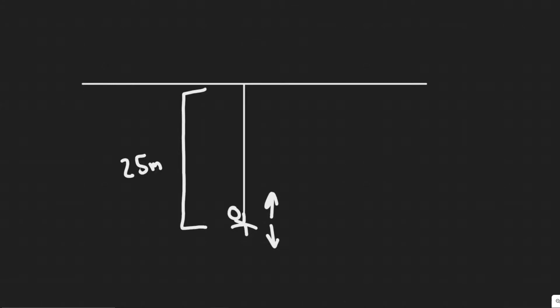In this problem we're told a bungee jumper with mass 65 kilograms jumps from a high bridge. After reaching his lowest point, he oscillates up and down, hitting a low point 8 more times in 43 seconds. He finally comes to rest 25 meters below the level of the bridge. Estimate the spring stiffness constant and the unstretched length of the bungee cord, assuming simple harmonic motion.